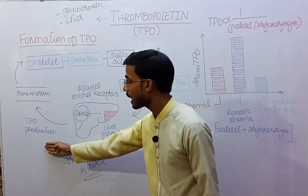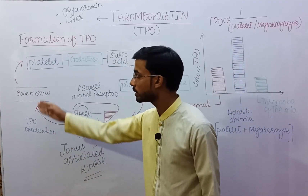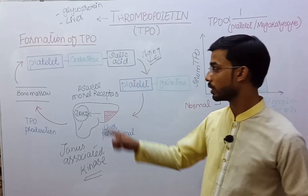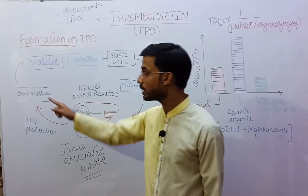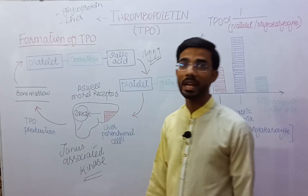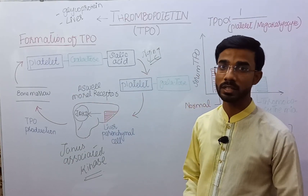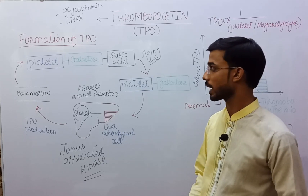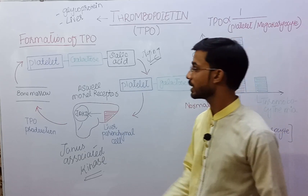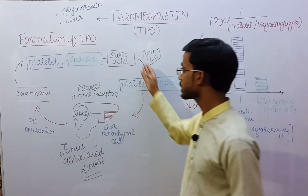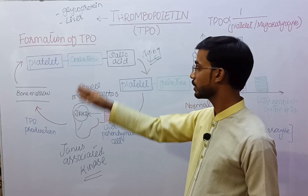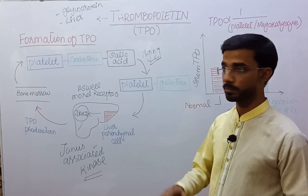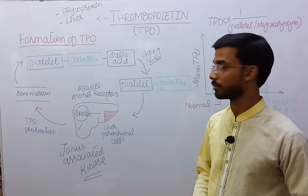TPO then acts on the bone marrow, where it helps in the production of platelets through the megakaryocyte. The platelets are then formed, and this cycle continues throughout life.